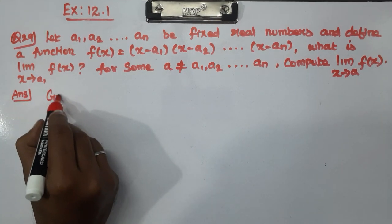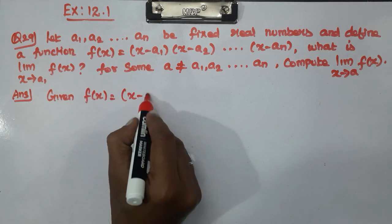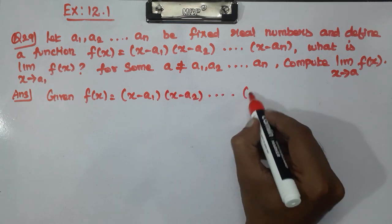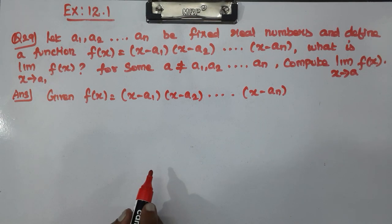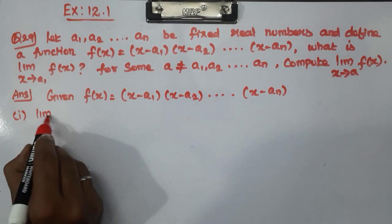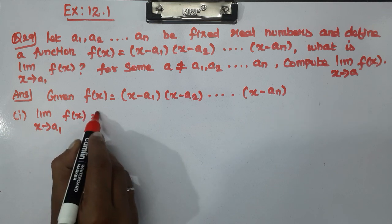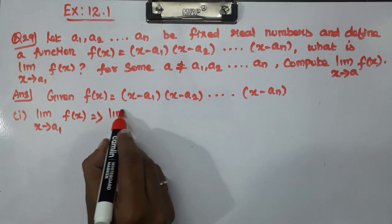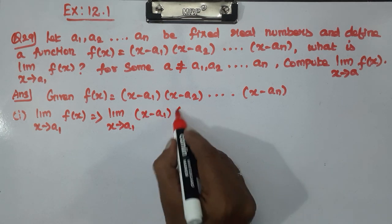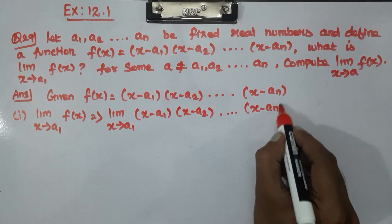Given the function, how is this function? Right now, number 1: first find the limit as x tends to a1 of f(x). Find the limit as x tends to a1 of (x minus a1)(x minus a2) up to (x minus an).